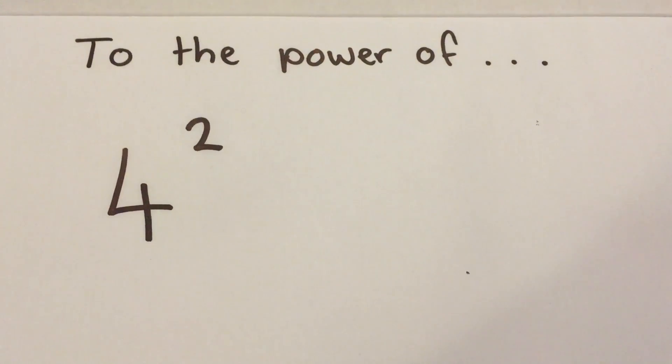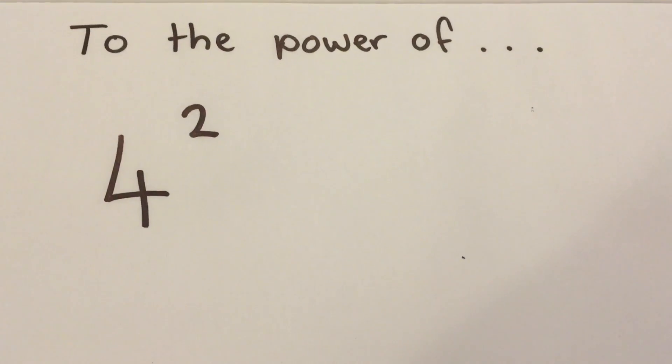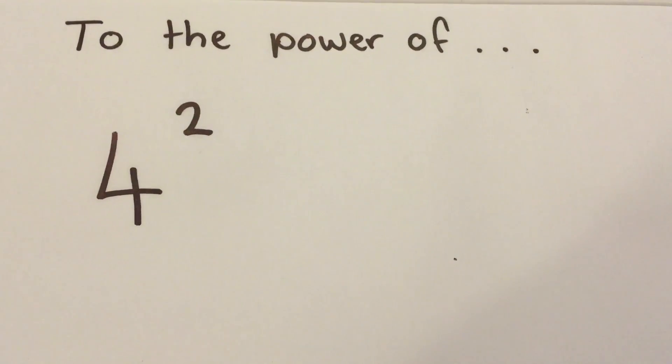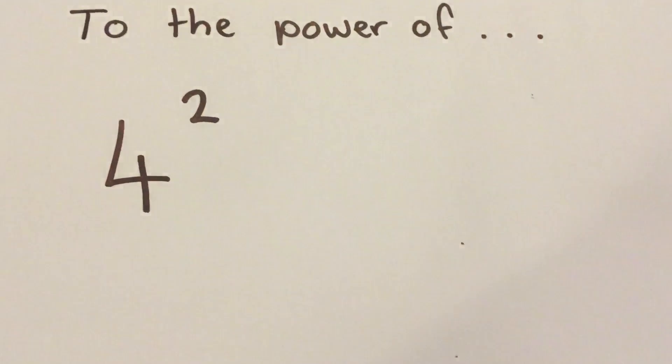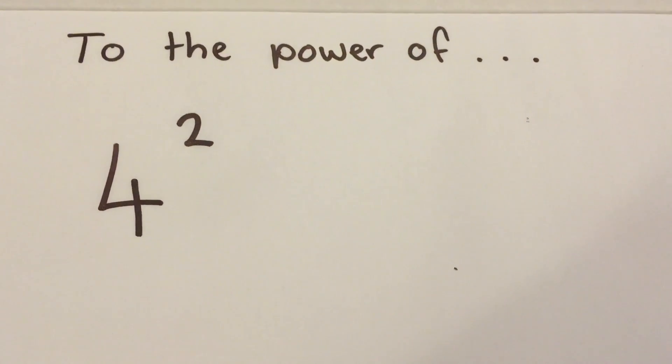So what we've got here is what's called 4 to the power of 2. Now a lot of people mistake it and think that it just means 4 times 2 which is 8, and they go oh 8, that's it, the number's 8. That's the answer but actually it's not.